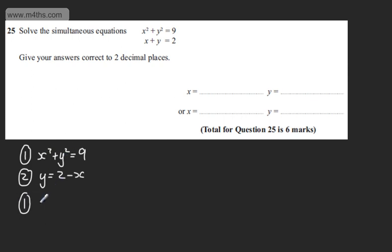So if I substitute this in, we're going to have x squared plus y squared. Well, y is now 2 minus x, which I need to square, and that will equal 9. What I'm going to do now is expand the bracket. So we'll have x squared plus 4 minus 4x plus x squared, and that will equal 9.